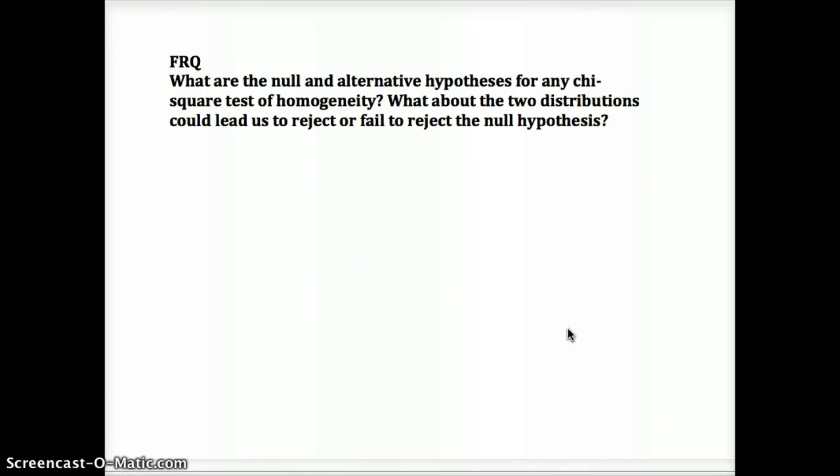Here's your free response question. What are the null and alternative hypotheses for any chi-square test of homogeneity? And then what has to happen with the two distributions that could lead us to reject or fail to reject the null hypothesis? Pause this right now, look over the lesson summary and examples in your book, look back at the video if you need to, and then answer the free response.